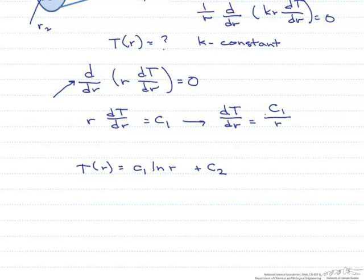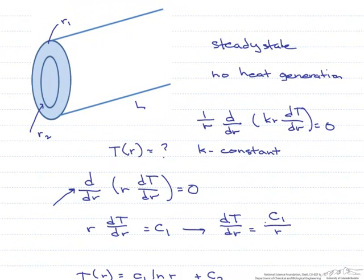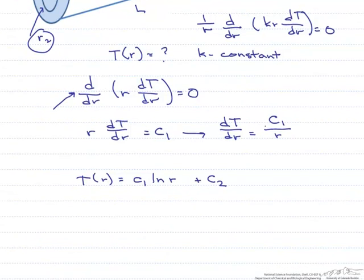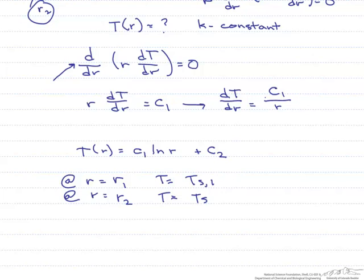Because we have two constants, we're going to need two boundary conditions. It makes sense if we go back to this that we do our two boundary conditions at r1 and r2. We're going to say that we have constant surface temperatures at each one of those. At r equals r1, our temperature is Ts,1, and at r equals r2, our temperature is Ts,2.